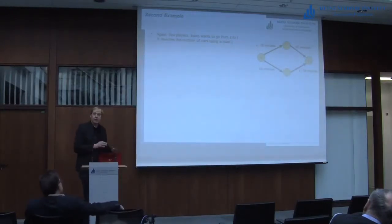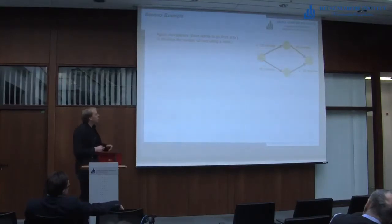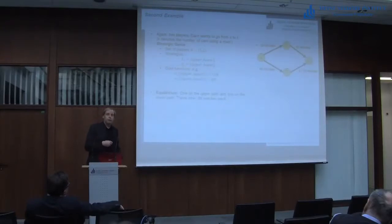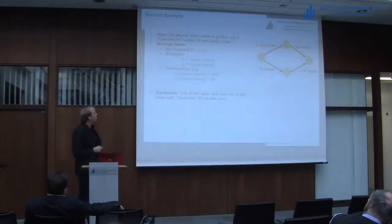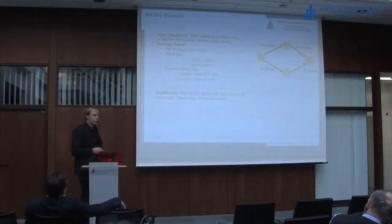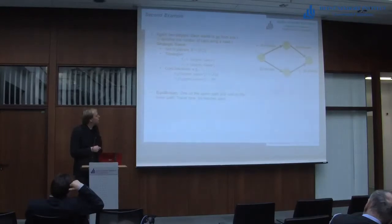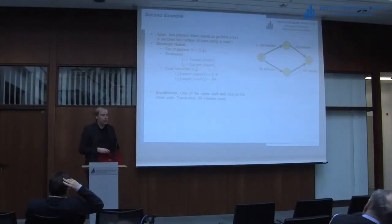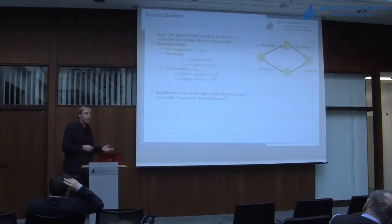Again, let's talk about traffic — a bit more complicated, but still two players going from S to T in this simple network. I denote by X the number of cars. We can formulate the whole thing as a strategy game. The set of players would be two players, call them one and two. The strategies are 'upper' and 'lower' for each player. The cost function gives: if both take the upper path, cost of player one is 118. If they choose different paths, the cost of the first would be 89. The equilibrium would obviously be one player choosing the upper path and the other the lower, both having travel time of 89 minutes.